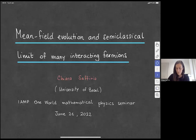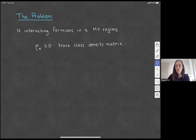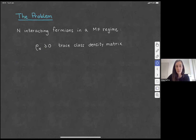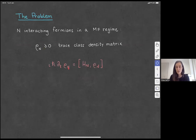The problem I'm interested in is the following. I will consider N particles with Fermi statistics — so capital N interacting fermions in a mean field regime. The object I'm going to look at is an N-particle operator that is non-negative and trace class, so it's a density matrix, and this evolution is given by the Liouville–von Neumann equation: the time derivative of the density matrix equals the commutator of a certain Hamiltonian with the density matrix rho_N.